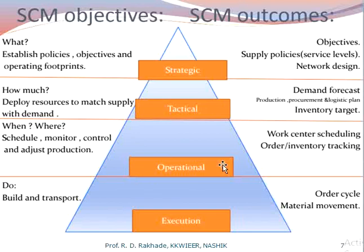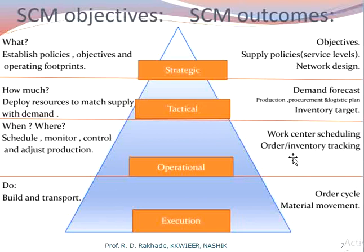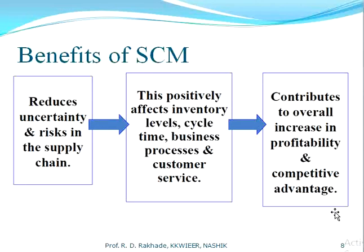The third level is operational, which deals with when and where — scheduling, monitoring, following up, and adjusting production according to demand. The outcome is work center scheduling and inventory or order management. The fourth and final level is execution: actually building or producing the product and transporting it. The outcome here is the order cycle and material movement to the customer, or services provided to the customer.